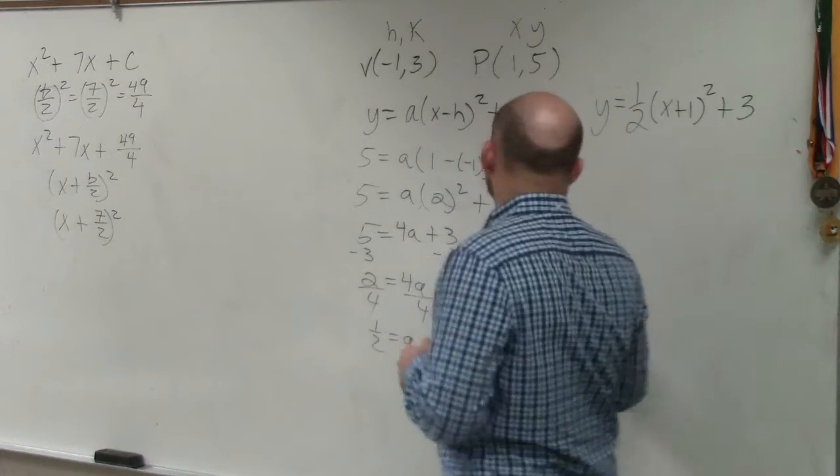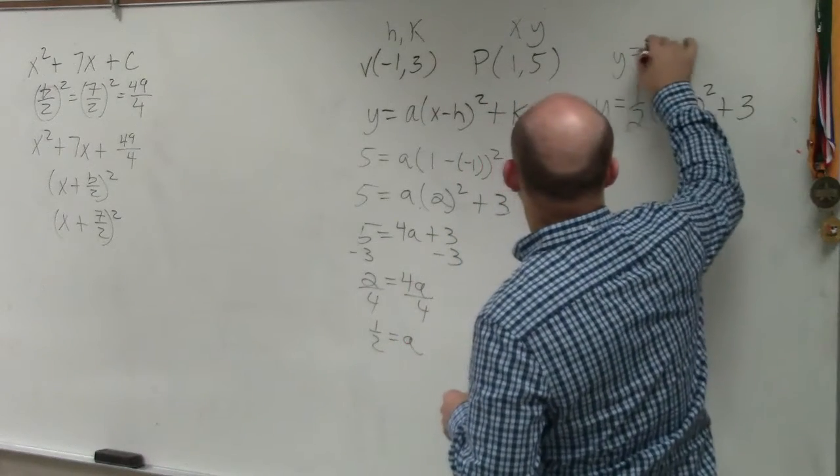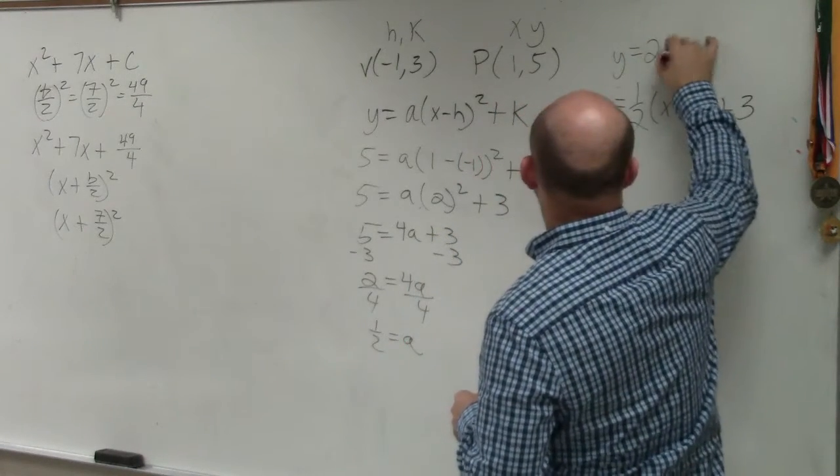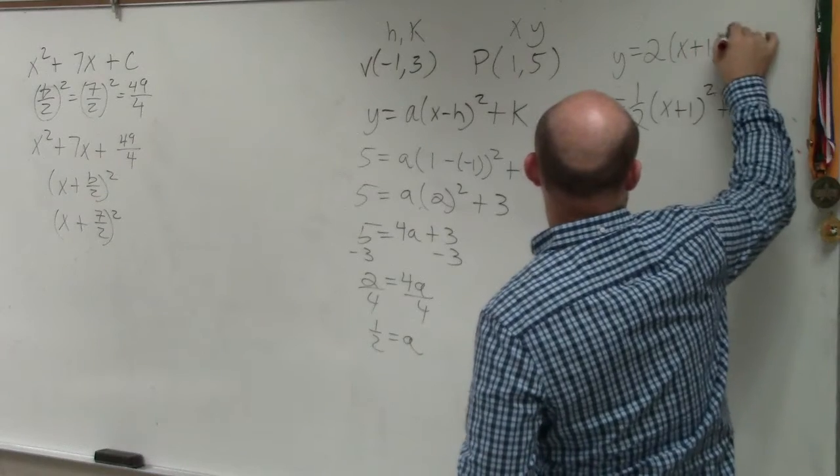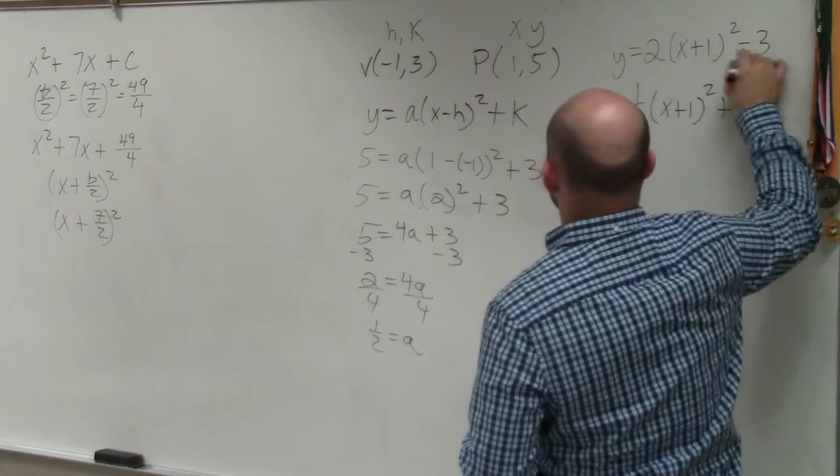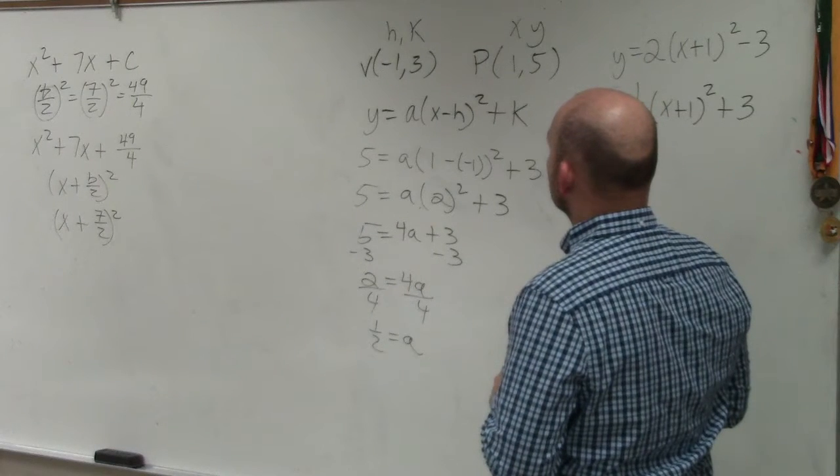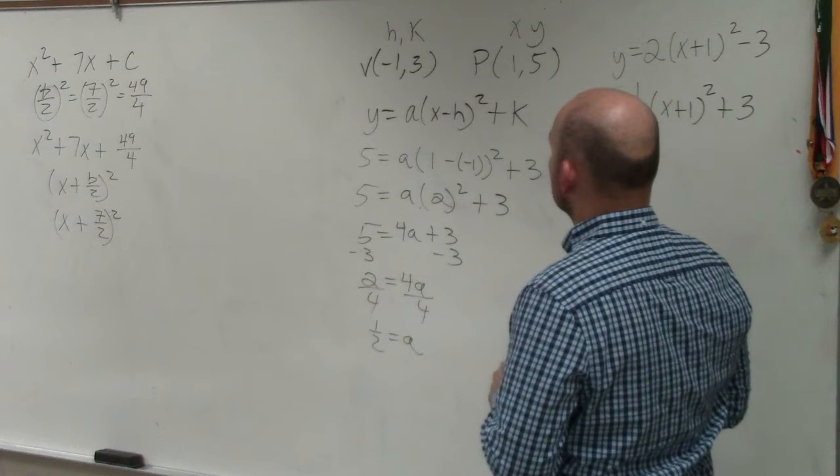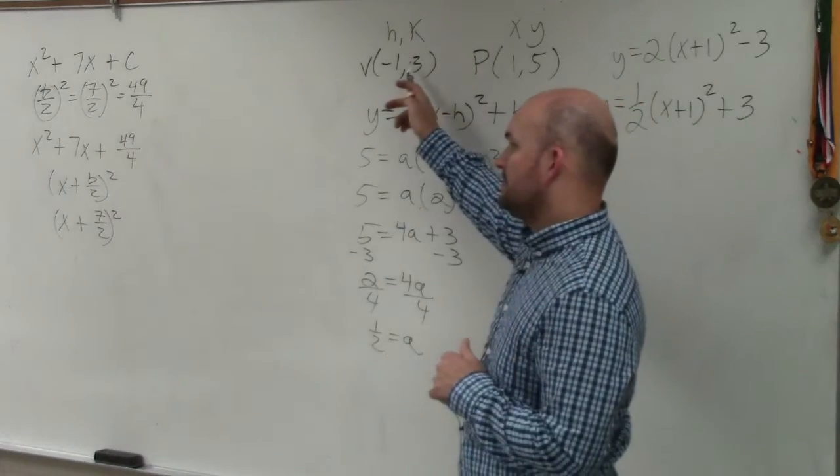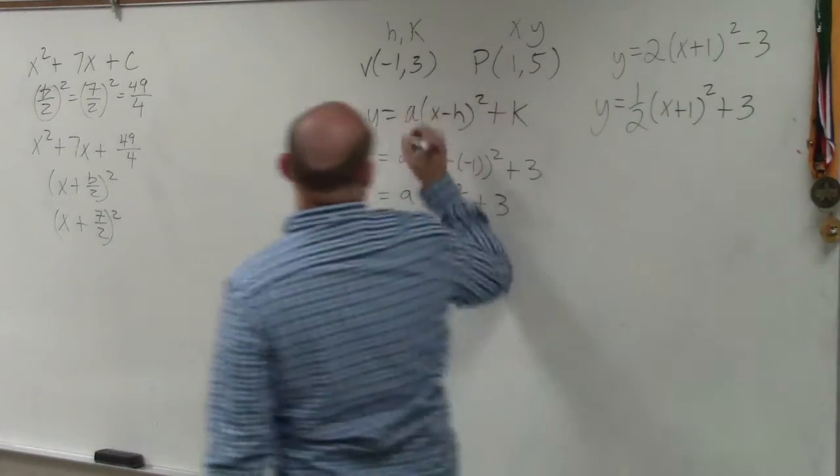What is it? It says y equals 2 times x plus 1 squared minus 3. Minus 3. Oh, because you put k as 3 as negative 3. It's not just 3. It's minus 1 minus 3. k is what, negative 3? Negative 1 minus 3.